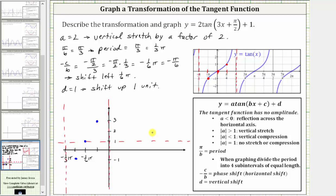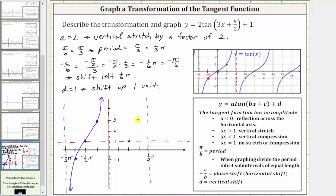Now that we have one piece of the graph, we can copy and paste it to the right. Starting at x equals zero, since the period is one-third pi radians, we go out one-third pi radians. We divide this into four equal subintervals, giving another vertical asymptote at x equals one-third pi. In the middle, the point is on the horizontal axis. Going right one-fourth of the period we go up two units; going left one-fourth of the period we go down two units, giving us another piece of the graph.